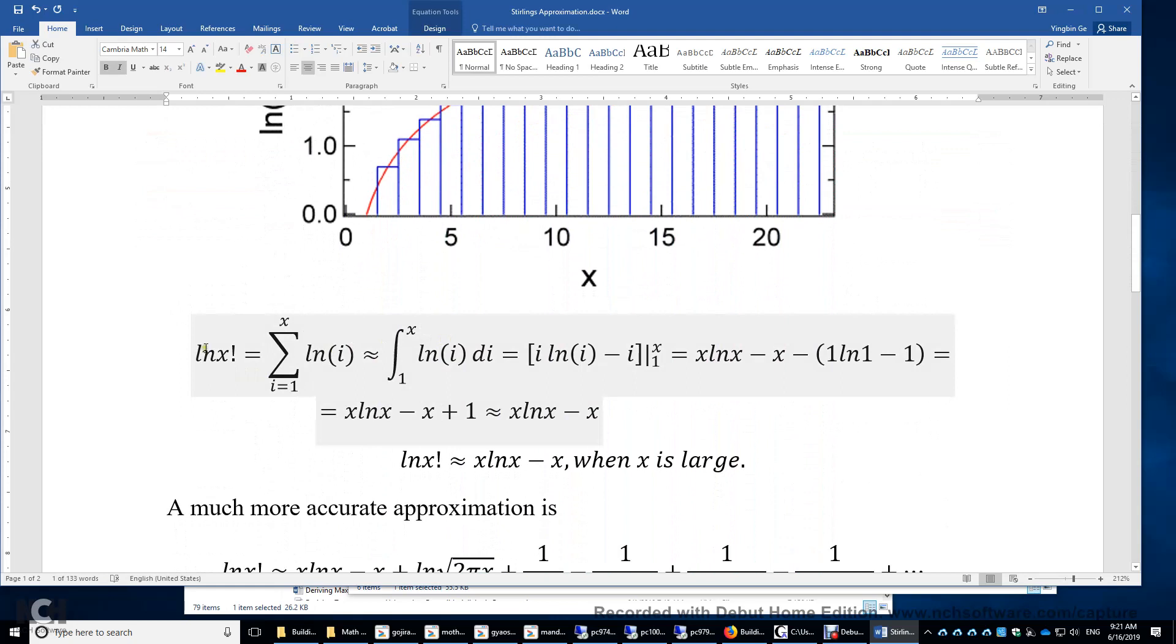And then here's the proof. ln x factorial, that's the sum of ln 1, ln 2, all the way to ln x. We will just use this integral to approximate the sum here. So we're integrating this ln i di from 1 to x. And the integral of ln i is i times ln i minus i.